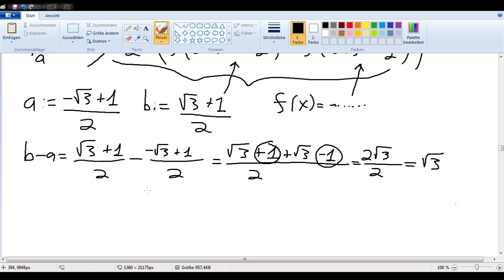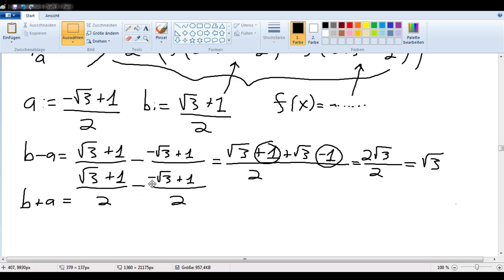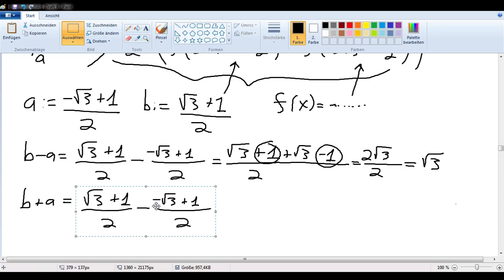So, what is a plus b? I'm also going to need to know that or b plus a. b plus a is the same thing, just with a plus sign. This time, I see these square roots of 3 are going to cancel and I end up with 1 half plus 1 half. Well, that's nice, that's just 1.